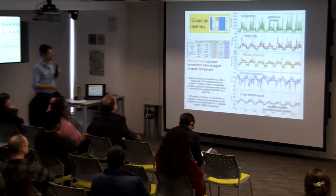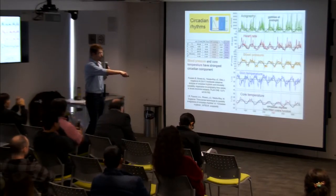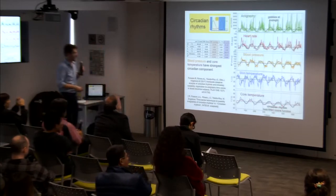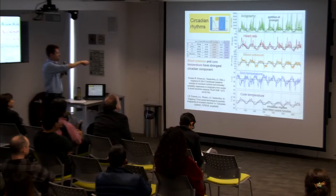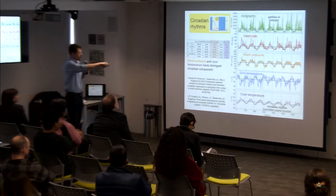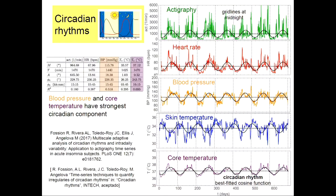The easiest way to quantify circadian rhythms is by fitting a cosine function — this method is called the cosinor method. Fitting this function gives you the average of the measure, the period, the amplitude, the time of most activity, and a goodness-of-fit parameter. Curiously, blood pressure and core temperature have the best periodic fits and the strongest circadian rhythm with the least fluctuations.